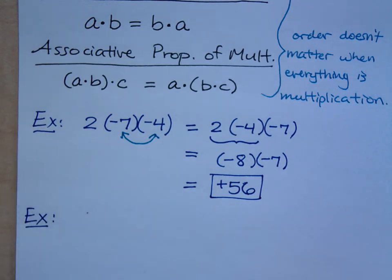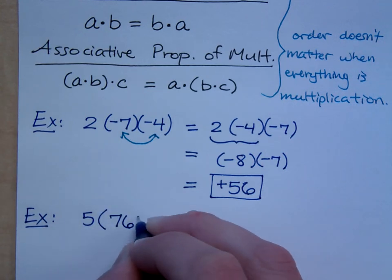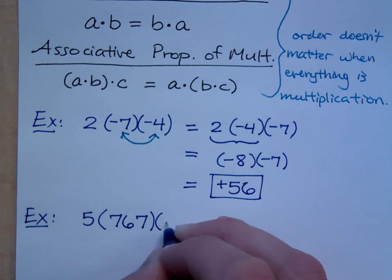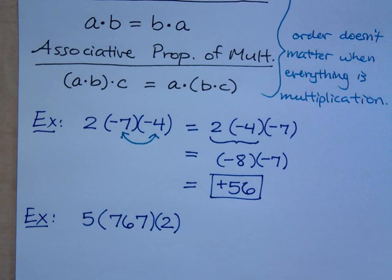For example, this is the kind of problem that I like to give my students in my algebra class, something that looks like this: 5 times 767 times 2. You can make your life difficult if you want to. Or you can rearrange these factors, put them in an order that makes a lot more sense to you.